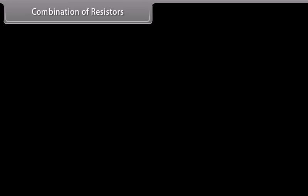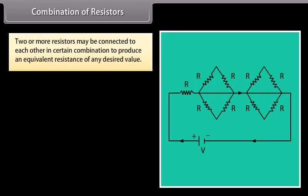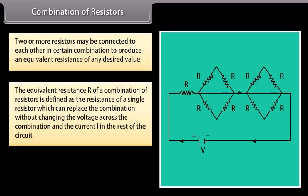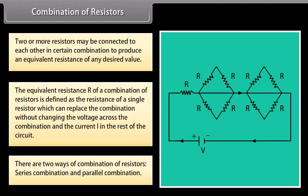Two or more resistors may be connected in combination to produce an equivalent resistance of any desired value. The equivalent resistance R is defined as the resistance of a single resistor that can replace the combination without changing the voltage or the current in the rest of the circuit. There are two ways: series combination and parallel combination.